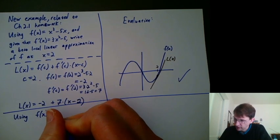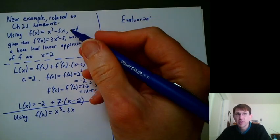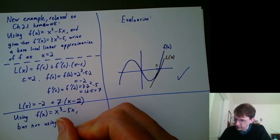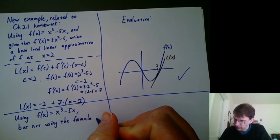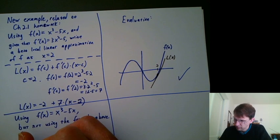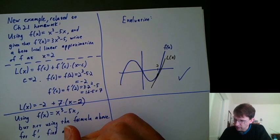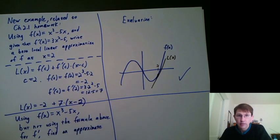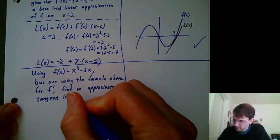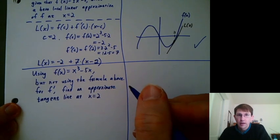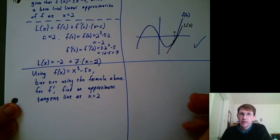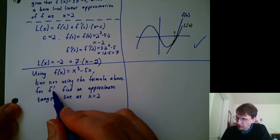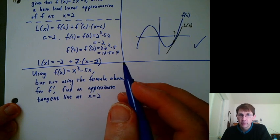So let's say using f(x) = x³ - 5x, which just happens to be the same function as up there, but not using the formula for f', find an approximate tangent line. So why is it going to be approximate? It's kind of confusing because a tangent line is already an approximation to our curved function. But here, since we're not given a formula for f', we're told to ignore the one we had above, we have to use some kind of approximate derivative.